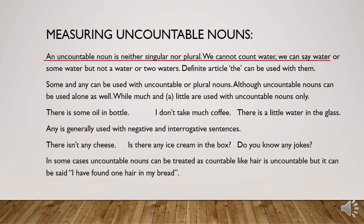Now, how can we measure uncountable nouns? As we discussed, nouns which cannot be counted are called uncountable nouns. These are not singular or plural in the traditional sense, but we treat them as singular nouns. For example, we cannot count 'water' — we can say 'water' or 'some water', but we cannot say 'one water', 'a water', or 'two waters'.